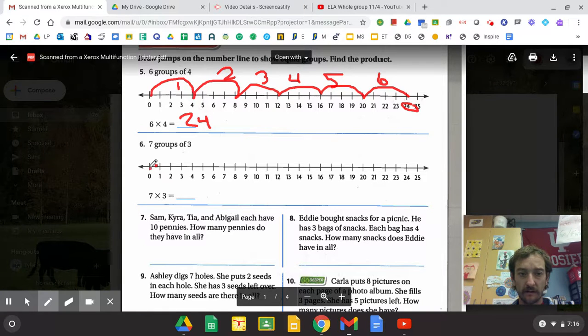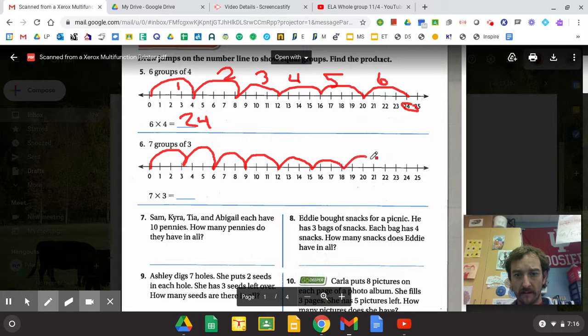So I'm going to start at zero, always start at zero. There's my first group. Second. Third. Fourth. Fifth. Sixth. Seventh. So right there, my seventh jump got me to twenty-one.